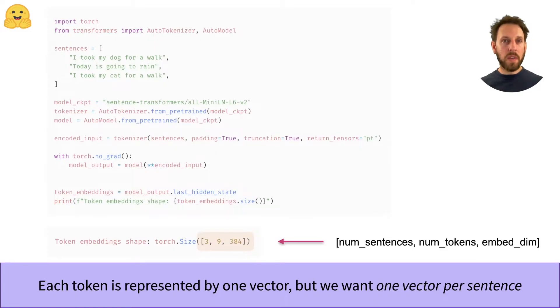Now, one problem we have to deal with is that Transformer models like BERT will actually return one embedding vector per token. For example, in the sentence, I took my dog for a walk, we can expect several embedding vectors, one for each word.